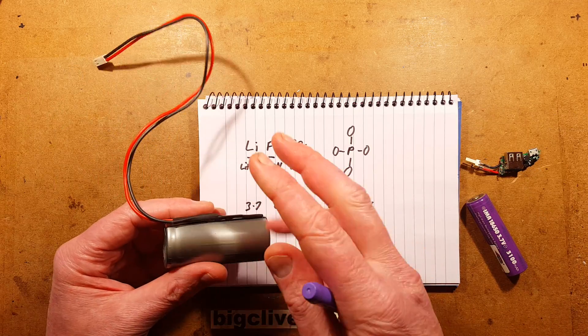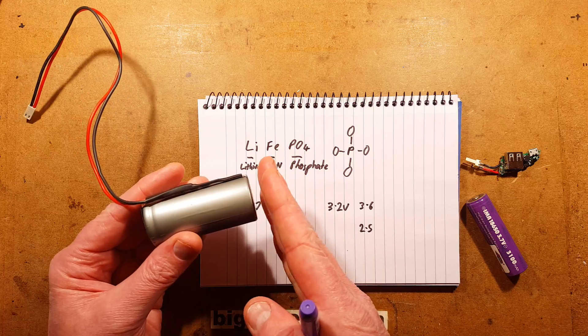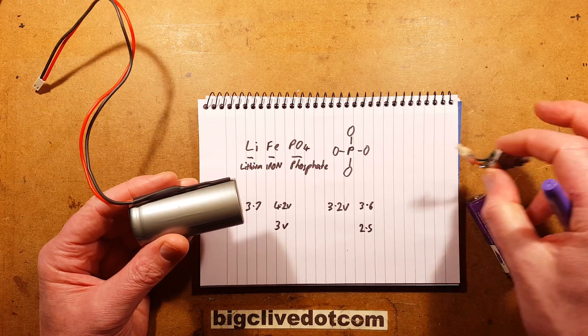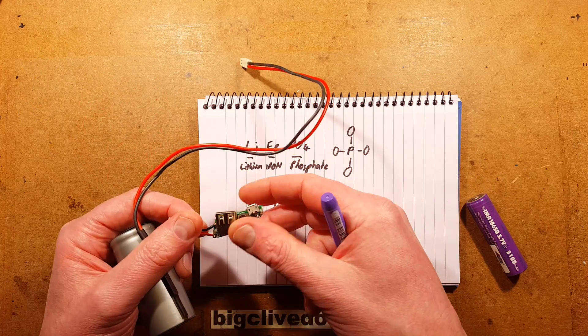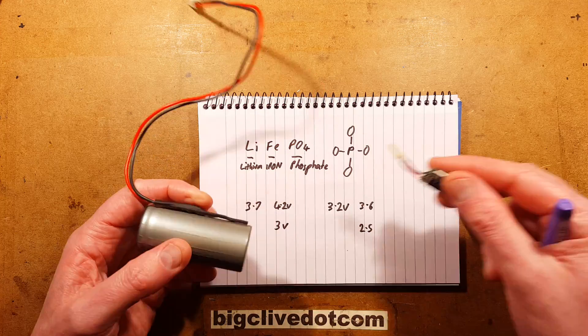Long before this reached its 4.2 volt cutoff voltage, this cut off here. And because the protection was kicking out just as the voltage stabilized, it just kept cycling on and off the little green and red LED as it topped it up.